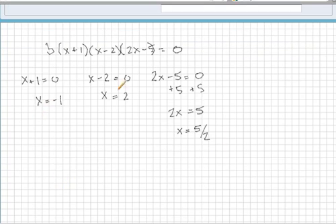So these are the x-coordinates of your x-intercepts, and your y-coordinates are always 0. So you can write them as ordered pairs like so.